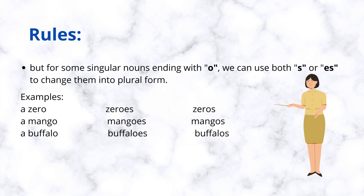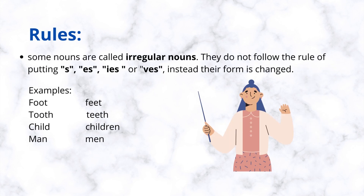But for some singular nouns ending with o, we can use both s or es to change them into plural form. Examples: a zero, zeros or zeroes. A mango, mangoes or mangos. A buffalo, buffaloes or buffalos.